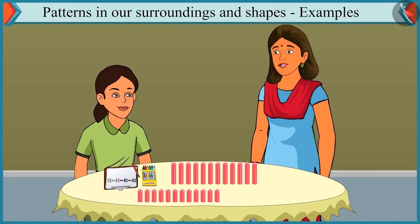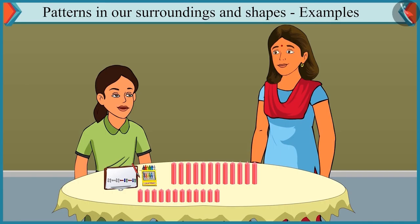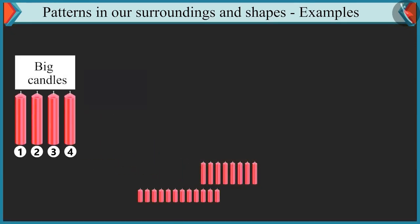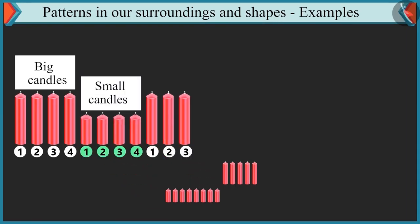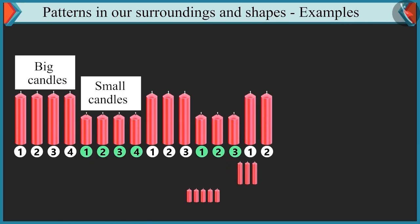Come on. Now, let's look at the next pattern. Now I will make a pattern with these candles. You have to complete it. Okay. Four big candles, four small candles near them. Then again, three big candles and three small candles. Yes. Then again, we will place two big candles and after that two small candles. Yes. You are absolutely right. Now proceed with this pattern and complete it.